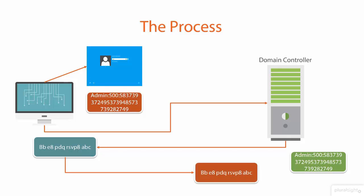The domain controller then retrieves the hash of the user's password and compares it to see if it's the correct answer. If it's the same answer, then you're allowed to cross the bridge. If it's wrong, you do not get to pass.